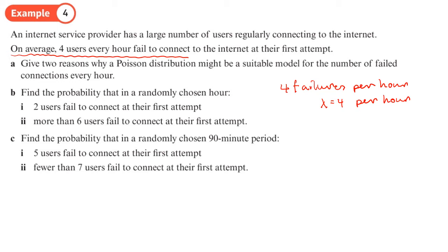Give two reasons why a Poisson distribution might be a suitable model for the number of failed connections. Well, these connections or failures to connect really, they happen singularly. So failures happen singly. They happen in single events. We could talk about them being independent. The probability of you failing is independent from failing another time.